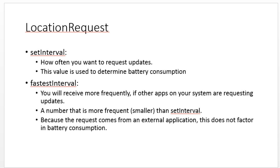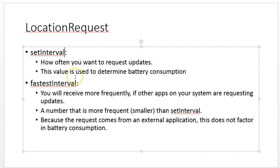FastestInterval — what is that? You can get more frequent updates than SetInterval if other apps on the phone are requesting updates. SetInterval is how often I want to request updates myself. But FastestInterval means if other applications on my phone are requesting location, I'll piggyback off them and potentially get those updates when the other applications are asking for them. So FastestInterval should be a smaller number than the interval — maybe 30 seconds where the interval might be 60 seconds — computed in milliseconds. That gives us an opportunity to get more frequent updates without costing battery.